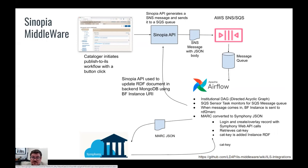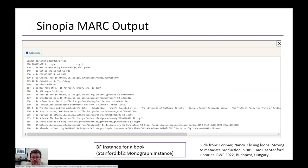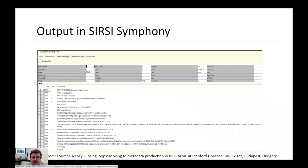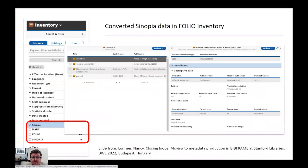This will allow us to describe in BibFrame but then output MARC for our ILS to support circulation and other workflows. Here's an example of Sinopia MARC output in the Sinopia editor, and then the same output once it reaches the Symphony ILS. It is also worth noting that the Sinopia middleware is being worked on for Folio and Annex Libris, with the idea to extend to different ILS and LSP systems. This is an example of Sinopia data converted to the Folio inventory for Stanford.